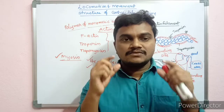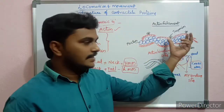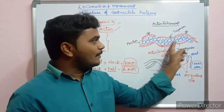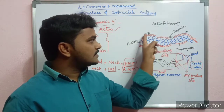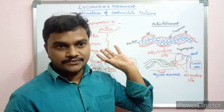Actin forms the thin filament. The thin filament is composed of three components: tropomyosin, F-actin molecules, and troponin subunits.